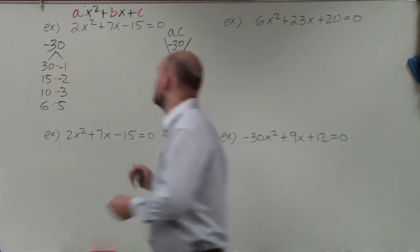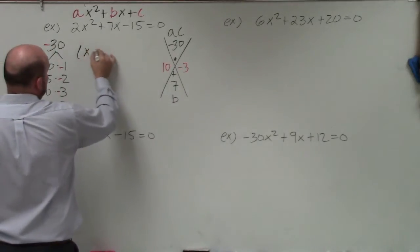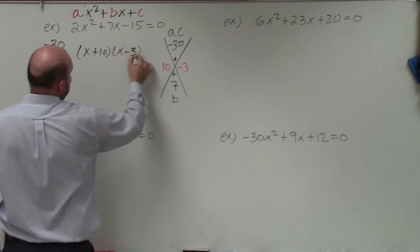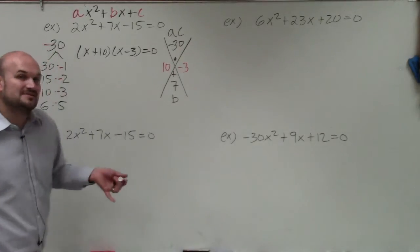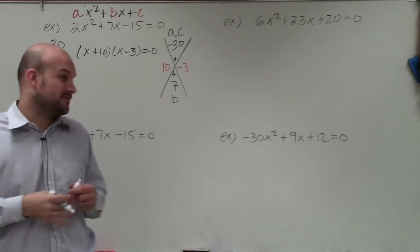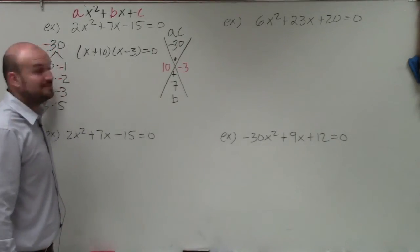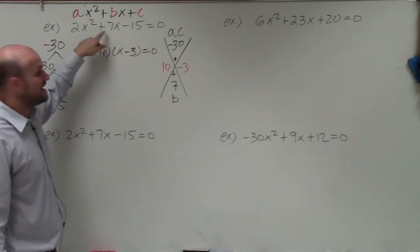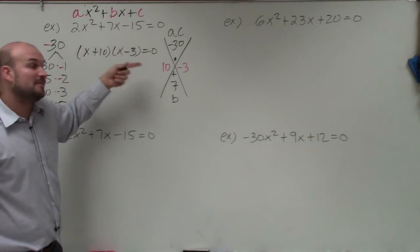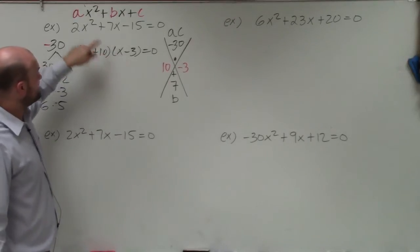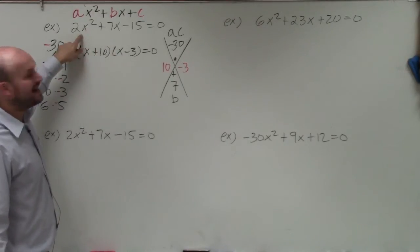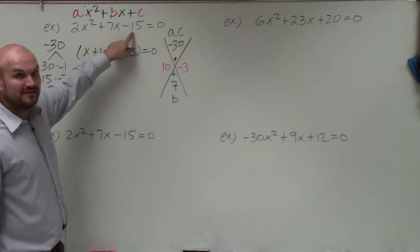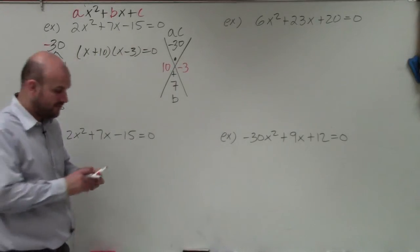Here's the common mistake students will make — they will quickly factor this as x plus 10 times x minus 3 equals 0, because that's what we did when a was equal to 1. But the problem is this is not correctly factored. You can always check your answer by applying FOIL: x times x gives you x squared, not 2x squared, and 10 times negative 3 gives you negative 30, not negative 15. So this is not the right factored form.